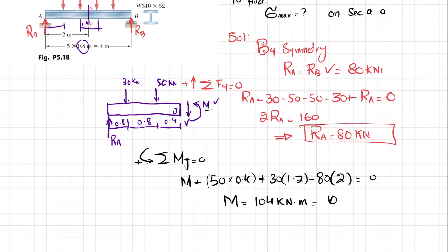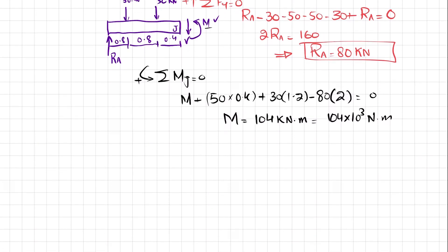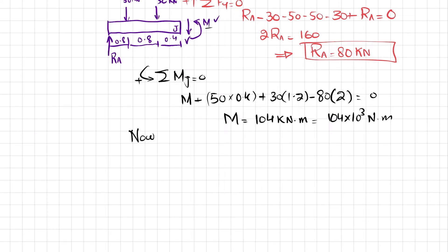Now, as we know that maximum stress equals M times C divided by I, we can write it M over I divided by C, where I divided by C is S, which is section modulus. So for W310 × 52, what will be the value of section modulus? We will check that in the property table at the end of the book, Mechanics of Materials by Beer and Johnston. Let me show you the value.